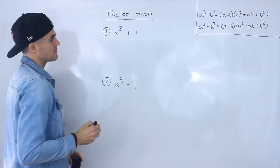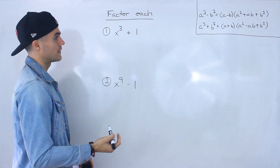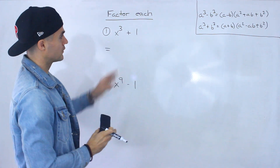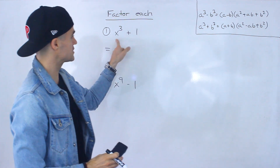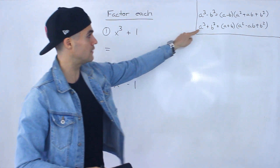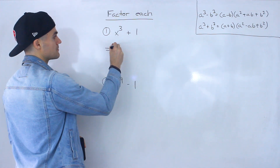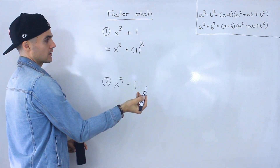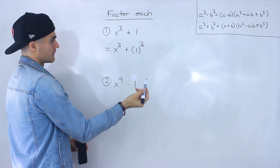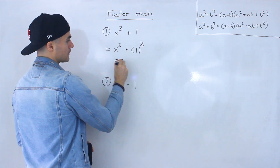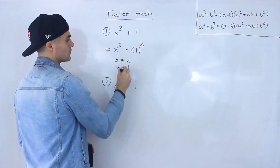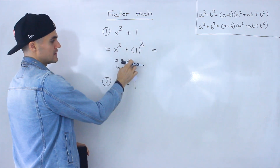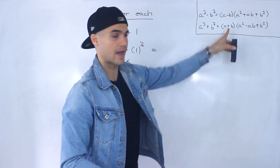Starting with number one, we've got to factor x to the power of three plus one. Whenever you get something like this, I recommend taking what you're given and trying to put it in one of these formats. Notice we're going to be dealing with a sum of cubes, and we can rewrite this as x to the power of three plus one to the power of three. The a value is x and the b value is one.